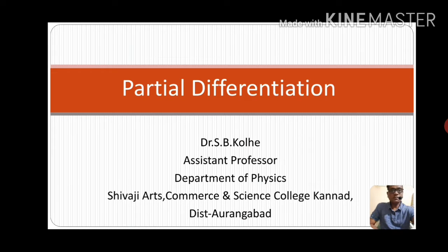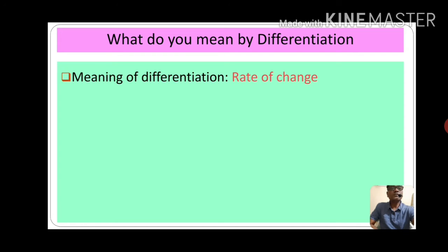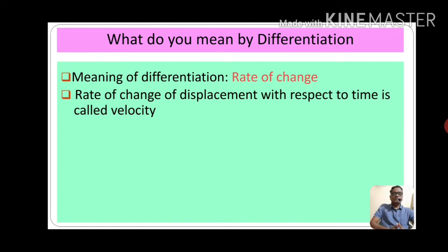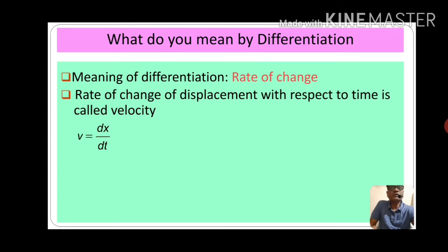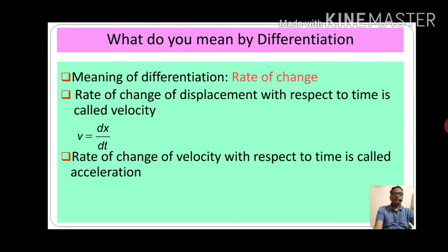Today we will discuss about partial differentiation. What do you mean by differentiation? First, we will see the meaning of differentiation. Differentiation is nothing but the rate of change. Rate of change of displacement with respect to time is called velocity, meaning V is equal to dx by dt. Rate of change of velocity with respect to time is called acceleration.